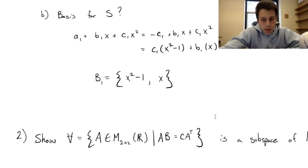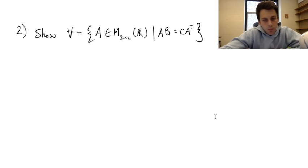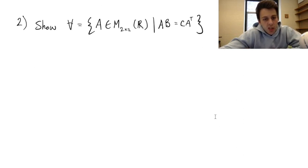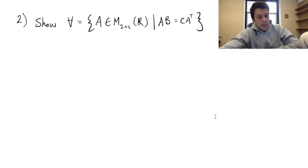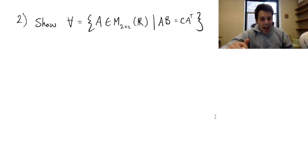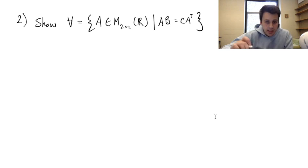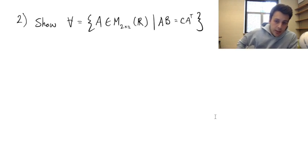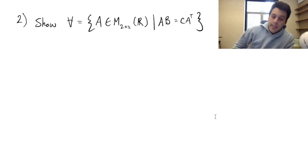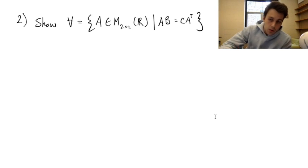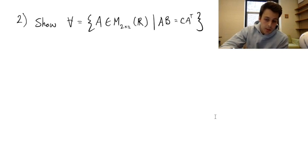Let's move on to question 2. Question 2 gives us a vector space where A is a 2×2 matrix satisfying the condition AB = CA^T. You can assume that B and C are also 2×2 matrices.